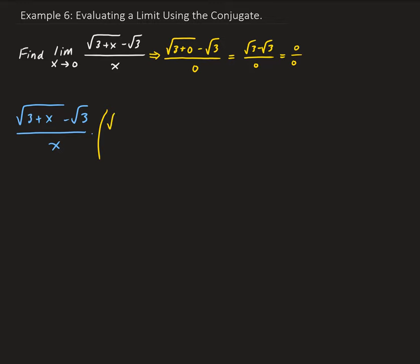So we have square root of 3 plus x plus square root 3 — for the numerator, those are conjugates of each other. If we multiply the top by that expression, then we need to multiply the bottom by the same expression. Make sure that these signs are different — make sure they're the opposite value.